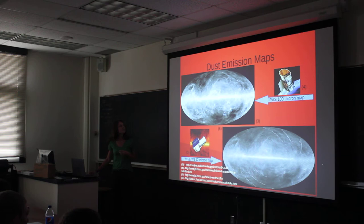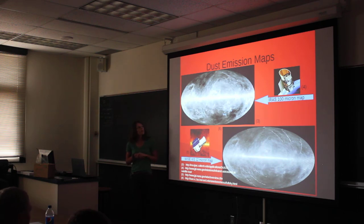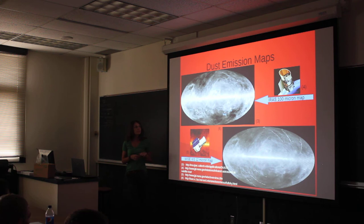These are the dust emission maps that we used. The top one is the IRAS 100 micron map, which we used for the larger grains. The IRAS instrument is a satellite launched in 1983 — it was the first satellite to do an all-sky map. We used satellites because most of the infrared waves are absorbed in the Earth's atmosphere.